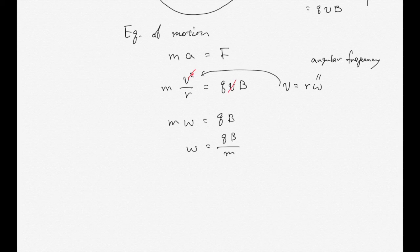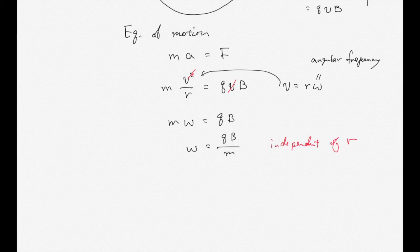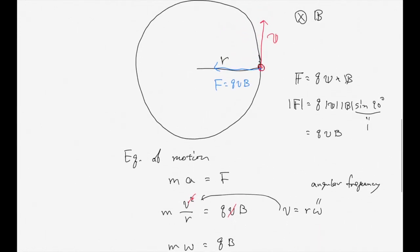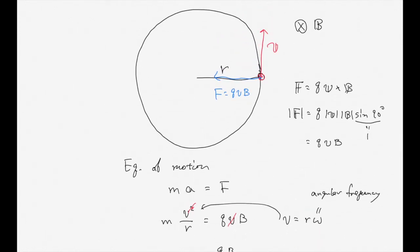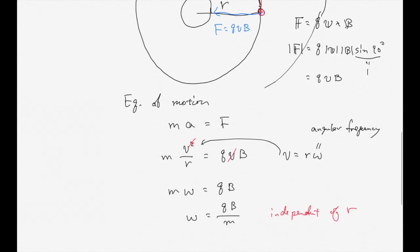This is an important result: the angular frequency omega is independent of R, the radius of the orbit. Even if you consider a really small circle or a really large one, the angular frequency is the same.